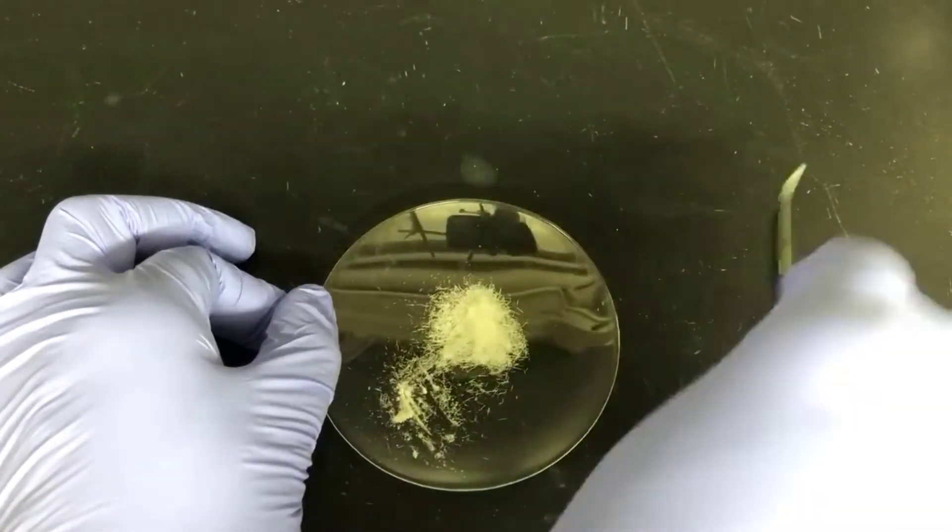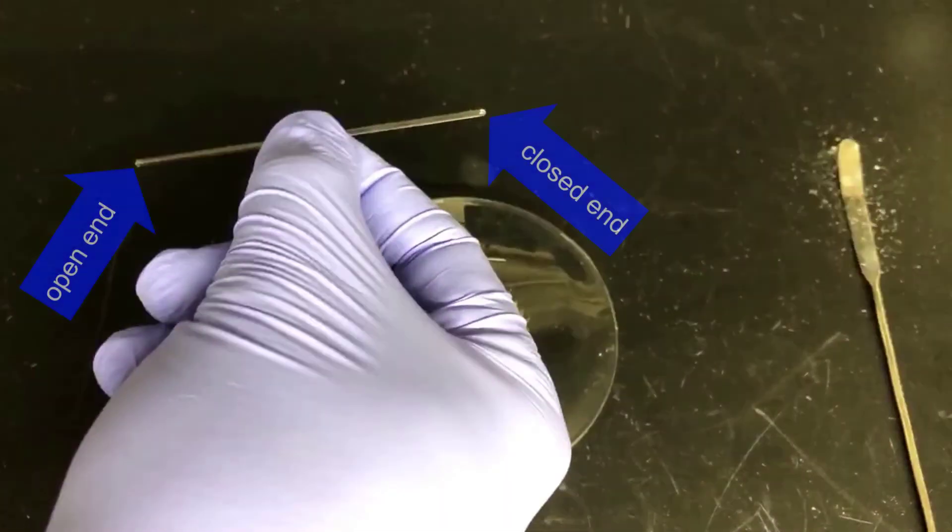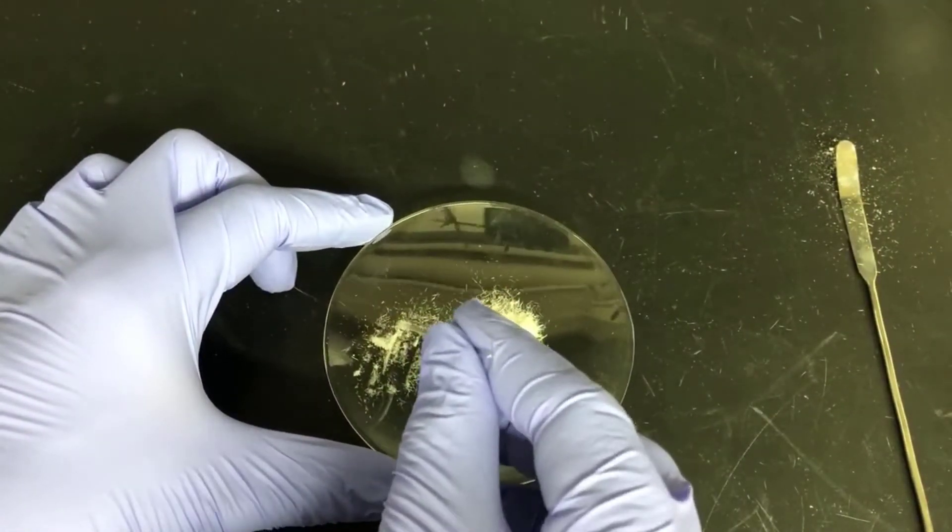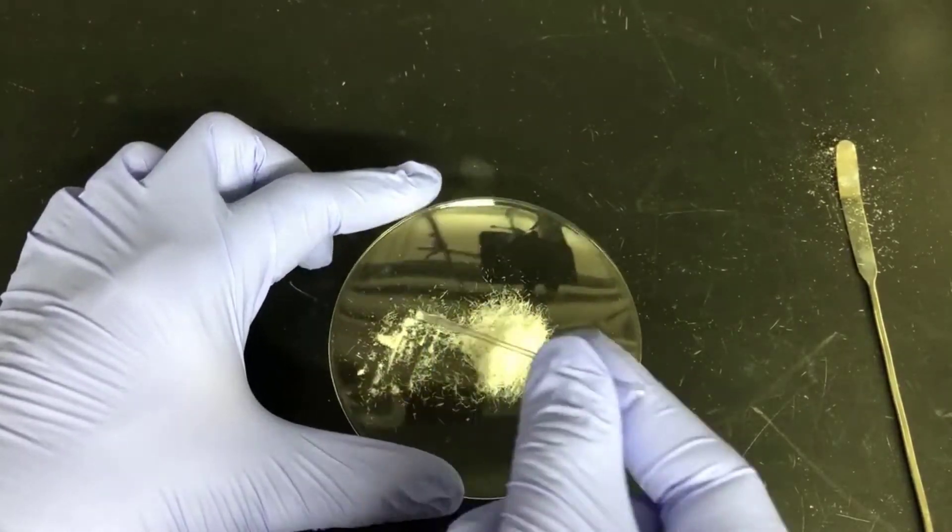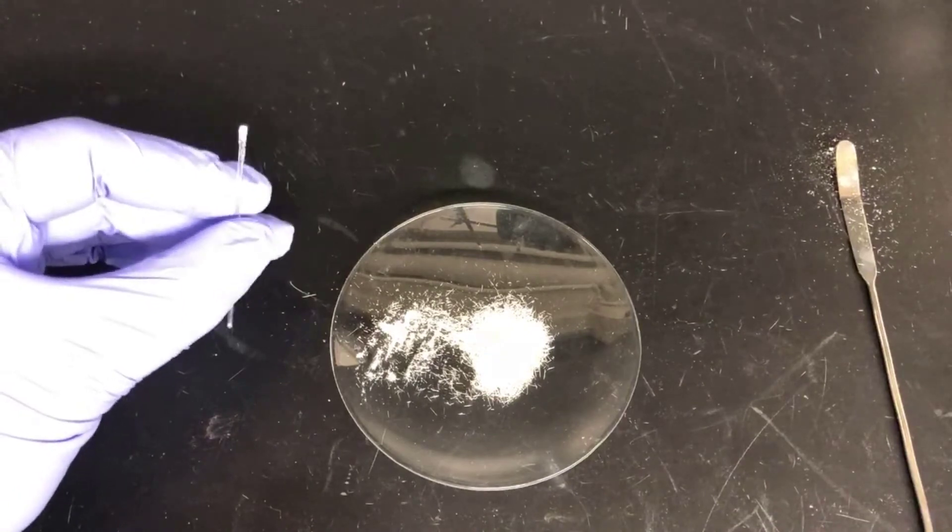Once the crystals are powderized, I'll take a melting point capillary, which is a tube that's open at one end, and jam the open end into the powder that I just made. This will force some of the powder into the capillary tube. Then I can tip it right side up and tap it on the bench to force the powder down into the end of the tube.